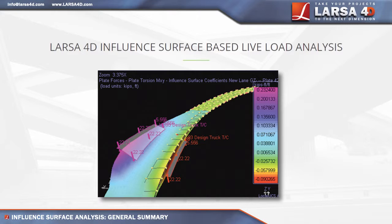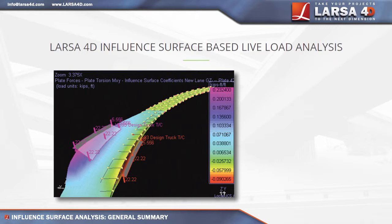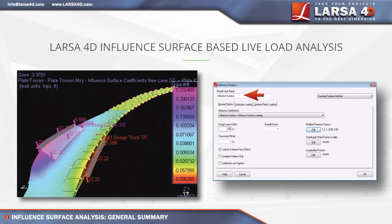After the roadway is defined as an influence surface, Larsa performs a moving load analysis to compute the results of a unit load across the surface, capturing the database of influence coefficients for all result types. Once the coefficients are captured, influence surface-based result cases are defined which correspond to particular design code requirements such as AASHTO LRFD and are used to obtain the maximized extreme effects.